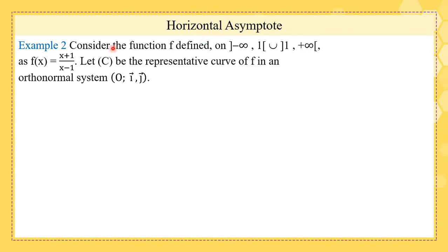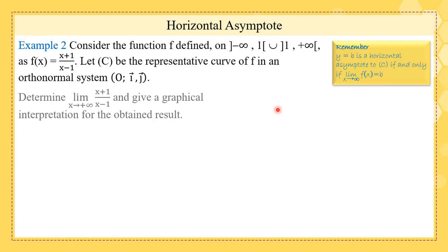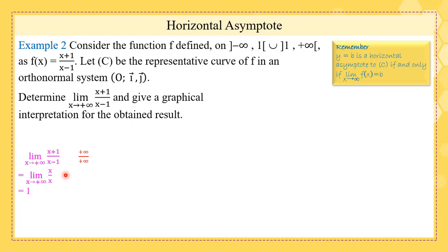Now let's see some applications about the horizontal asymptote. We have a function and C is its curve. Remember, y equals b is a horizontal asymptote if and only if the limit as x tends to infinity is b. The question is to determine the limit as x tends to plus infinity of the function and give a graphical interpretation. The limit as x tends to plus infinity of (x+1)/(x−1) is plus infinity over plus infinity, so we take the limit of x over x using the leading term or L'Hôpital's rule, and this is 1.